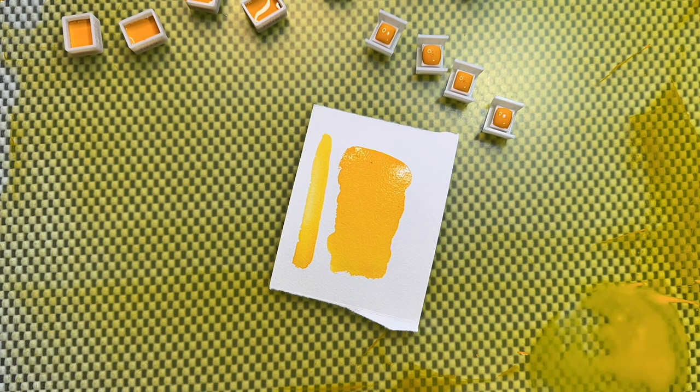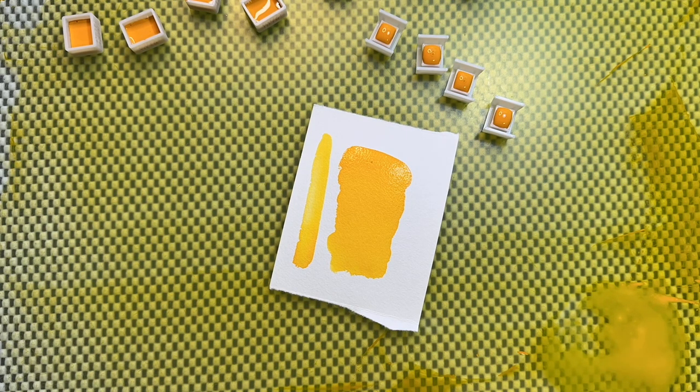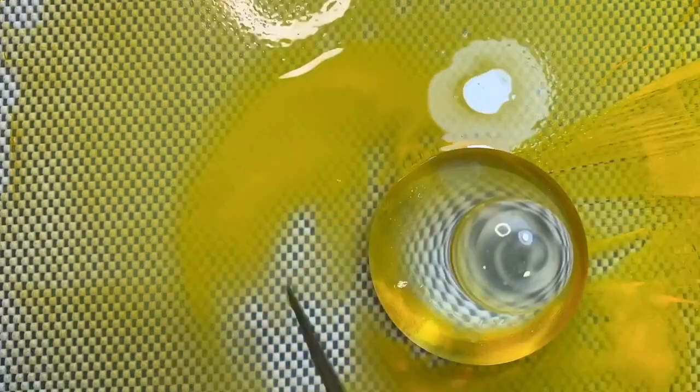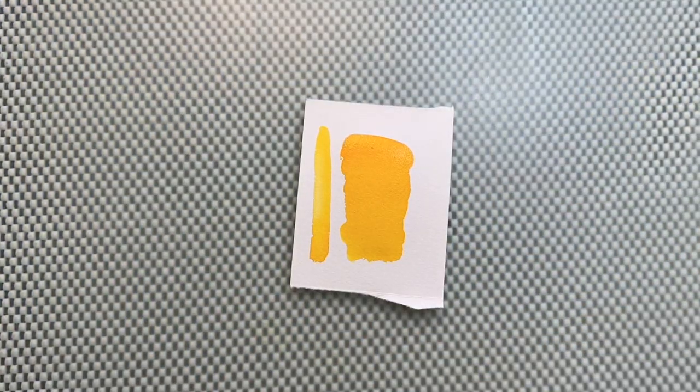With phthalos, with quinacridones, with some earth colors, you can see a large drying shift, which means it changes a lot while it's drying. Where it has a deep color to begin with, it dulls down while it's drying.